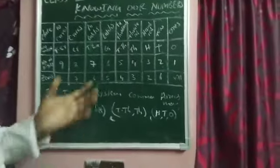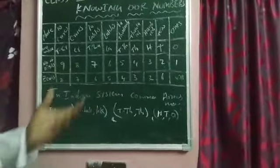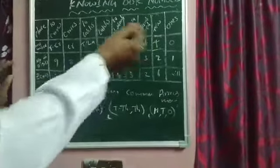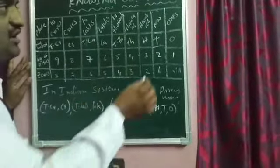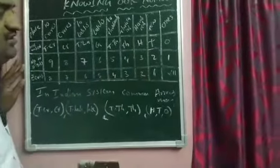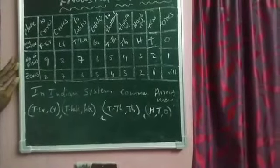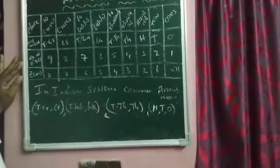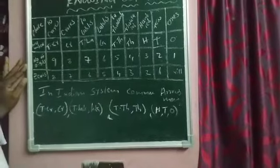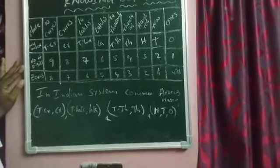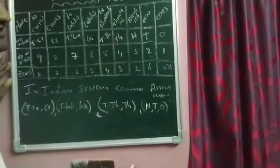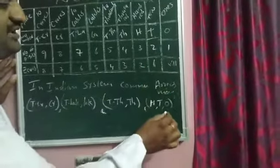In the Indian system we use commas. How do you arrange the commas, and what is the use of commas? If you use commas, large and big numbers are very easy to read and write. That is why we use commas in the Indian system. The first comma is arranged after the first three digits.